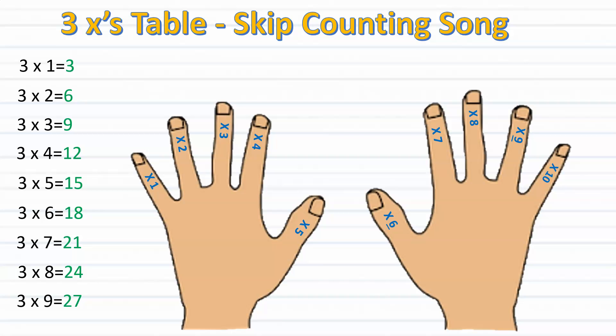All right now like all professional singers before we sing we must clear our throat. So now let's begin. Three, six, nine, twelve, fifteen, eighteen, twenty-one, twenty-four, twenty-seven.